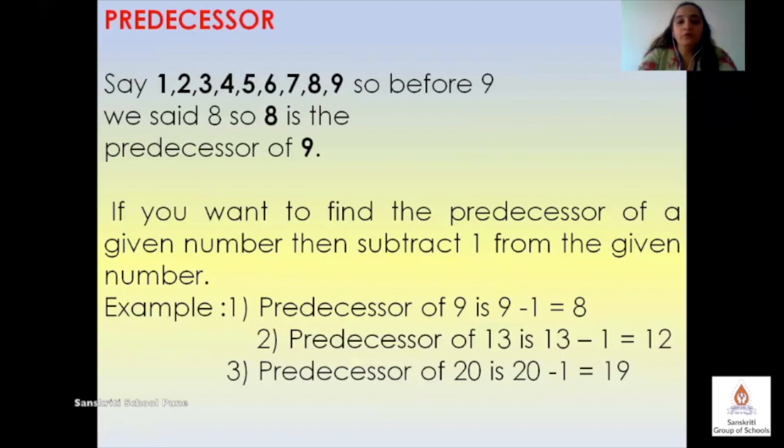If you want to find the predecessor of a given number, simply subtract 1 from it. Example: Predecessor of number 9 will be 9 minus 1 which is 8. Predecessor of number 13 will be 13 minus 1 which is 12. And predecessor of 20 would be 19.